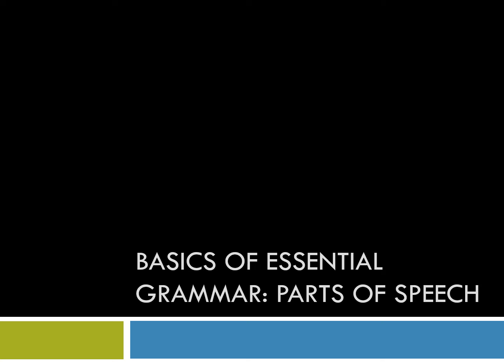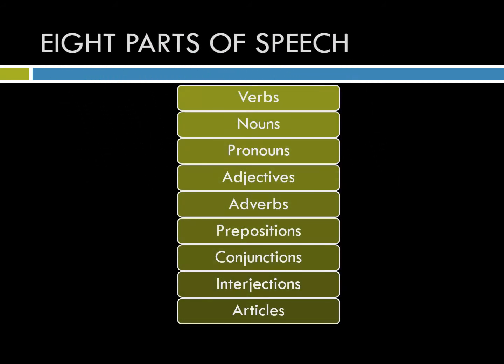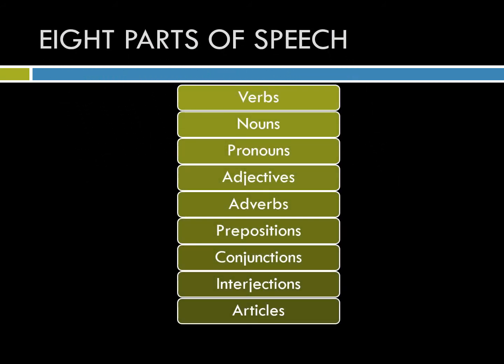This lecture is on the basics of essential grammar: parts of speech. There are eight parts of speech — pronouns, adjectives, adverbs, prepositions, conjunctions. The traditional way of teaching eight parts of speech usually included interjections, but currently it's usually articles. I'll go over interjections, and since articles belong in determiners, I'm just going to look at determiners in general.